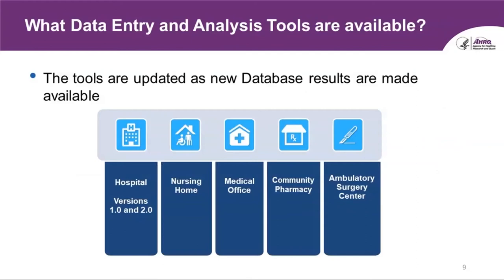We have tools for each of the SOPS surveys — the SOPS Hospital Surveys 1.0 and 2.0, as well as the Nursing Home, Medical Office, Community Pharmacy, and Ambulatory Surgery Center surveys. One feature of the tool is to show you the latest database results compared to your own survey data. Currently, the SOPS Hospital 2.0 tool allows users to compare results with the 2019 pilot test results, and this tool will be updated approximately in spring 2021.